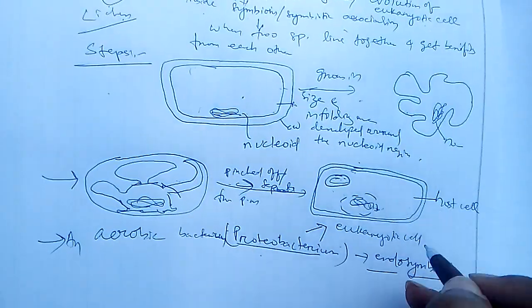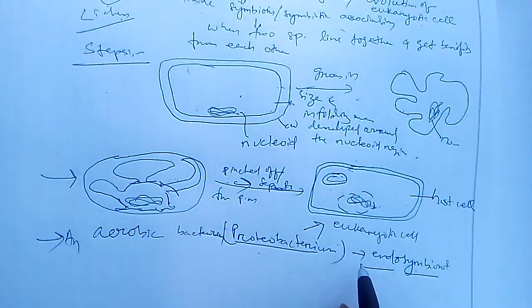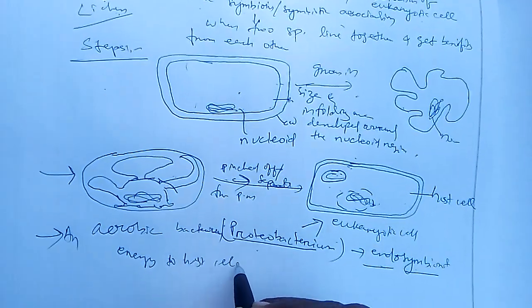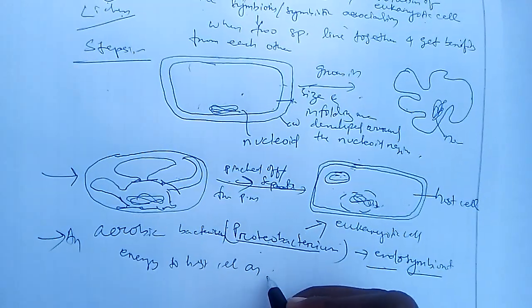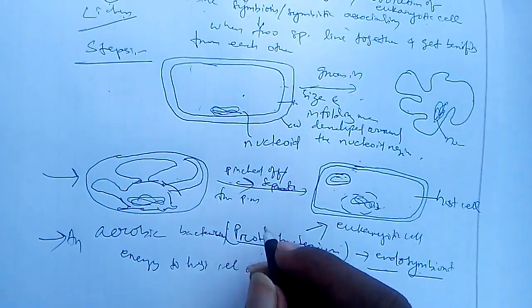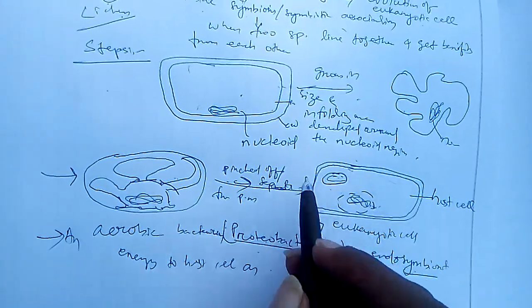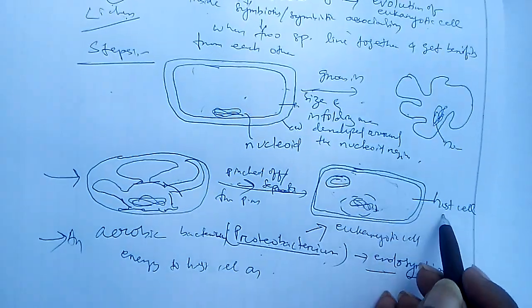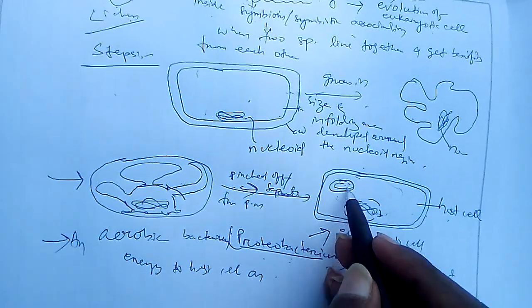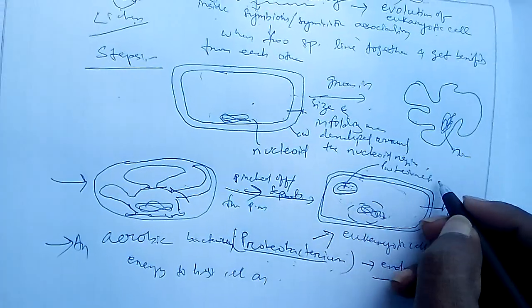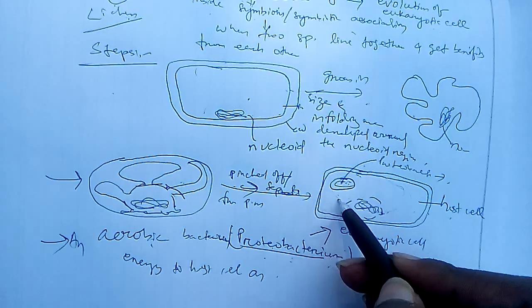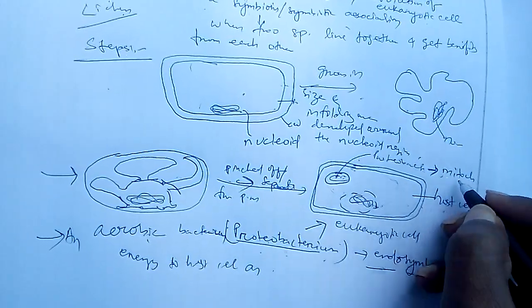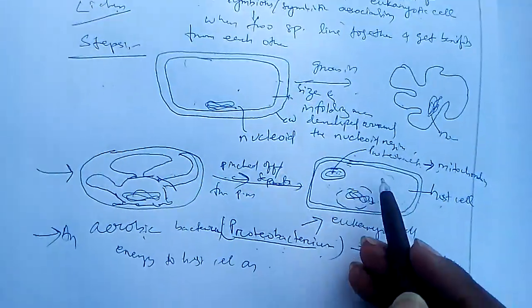This organism survives in a symbiotic association inside the host cell. Eventually, this endosymbiotic proteobacterium gives energy to the host cell. Being aerobic in nature, it carries out aerobic respiration and releases oxygen, making the environment oxygen-rich inside the host cell. This proteobacterium eventually develops into the mitochondrion.